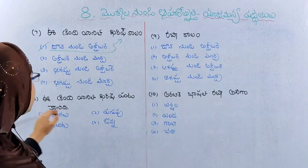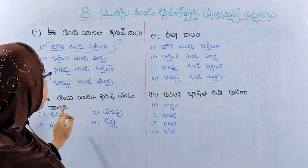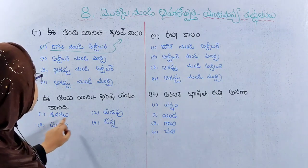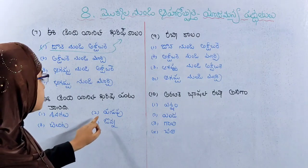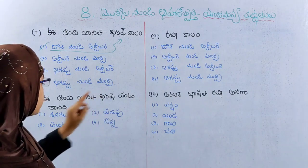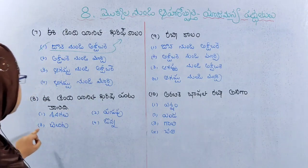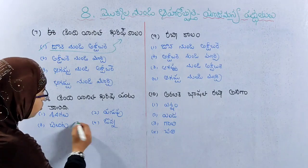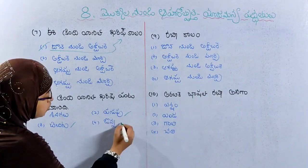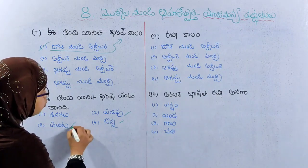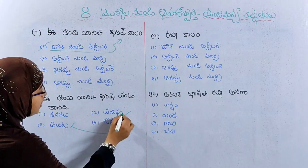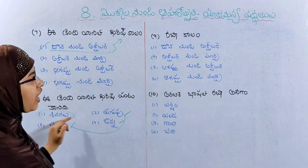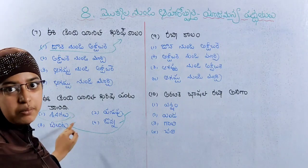The next question is again about the Kharif crop season. Option 1 is June–October. Option 2 is August–October. This is the Kharif crop season question.